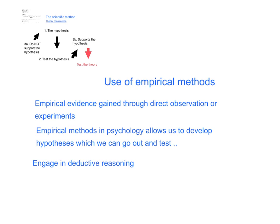Unfounded beliefs are not based on facts. Empirical methods in psychology allow us to develop a hypothesis which we can go out and test, and this allows us to engage in deductive reasoning. By using empirical methods, we can develop our theories in a logical sense. Psychology is only a science as long as its theories are actually testable using the scientific method. This is why the issue of whether psychology is a science is still a debate, because many psychological theories cannot be tested empirically — for example, Freud.